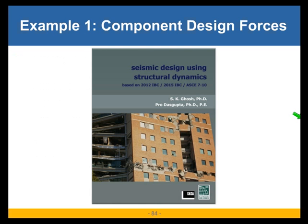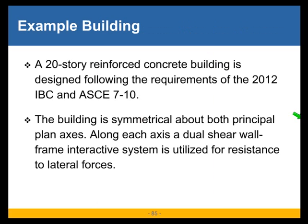The first example is extracted from one of our most popular publications, authored by Dr. Ghosh and Dr. Dasgupta, where you can refer if you want to see the example in full detail. In this example, we are looking at a 20-story building which is symmetrical about both principal axes and utilizes a dual shear wall-frame system to resist lateral forces along each axis.